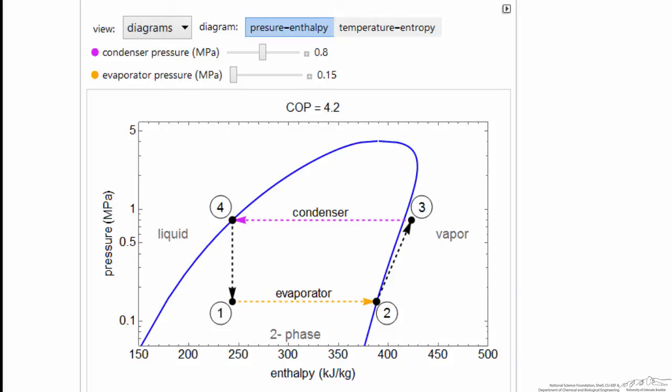This high pressure liquid at four goes through a throttle, so the enthalpy doesn't change - there's no heat transfer, there's no work done.